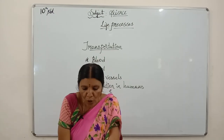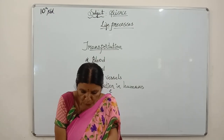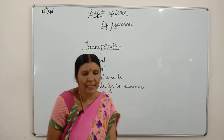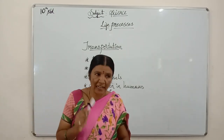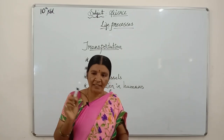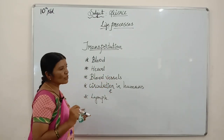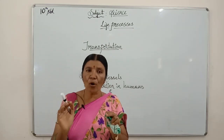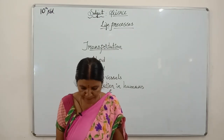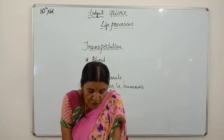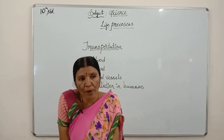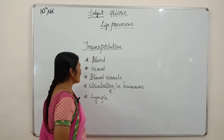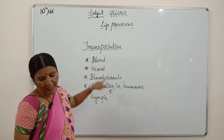Conversion of complex food into simple absorbable form. In the digestion process, we come across villi. Villi contain more blood capillaries so that blood can absorb food and take it to all parts of the body. So there also we come across blood.